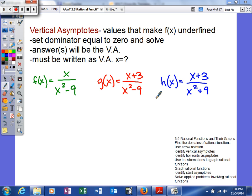Next, what we're going to talk about is how to find vertical asymptotes. Vertical asymptotes are basically the values that make f(x) undefined. So what we're going to do is set our denominator equal to zero and solve. The answer or answers will be the vertical asymptotes. They must be written as vertical asymptote x equals something. It is an equation of a line, so make sure that you're aware of that when you're finding these things.